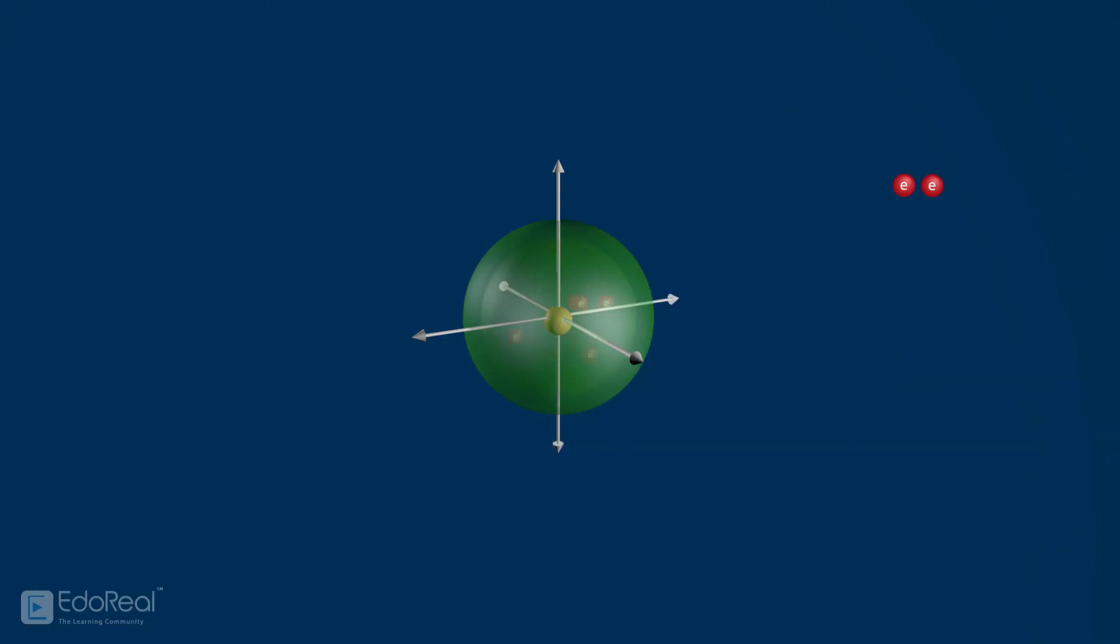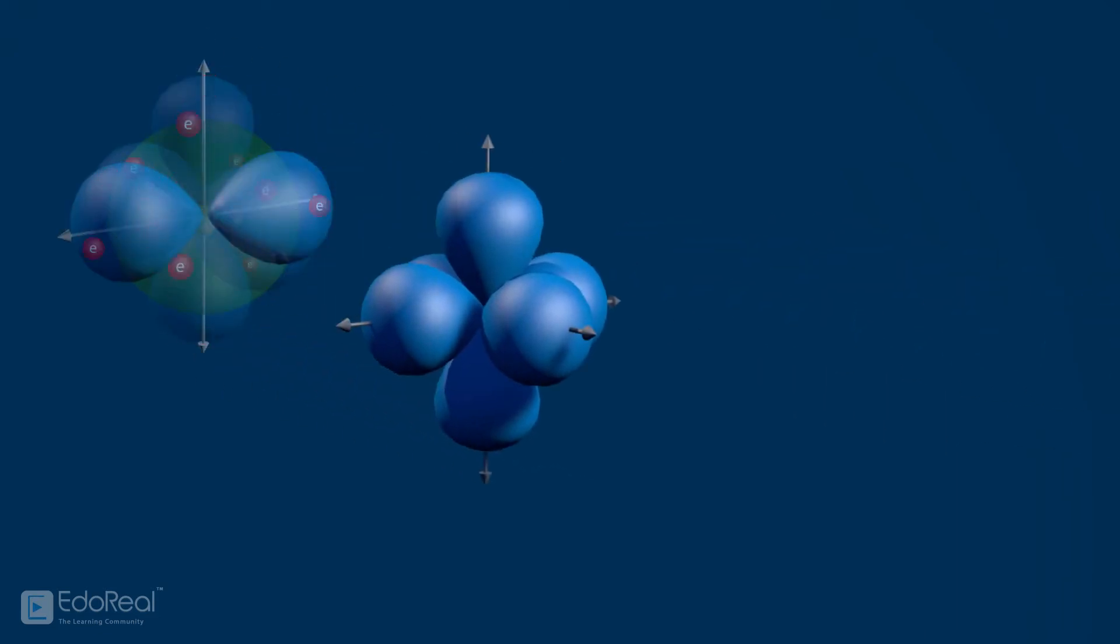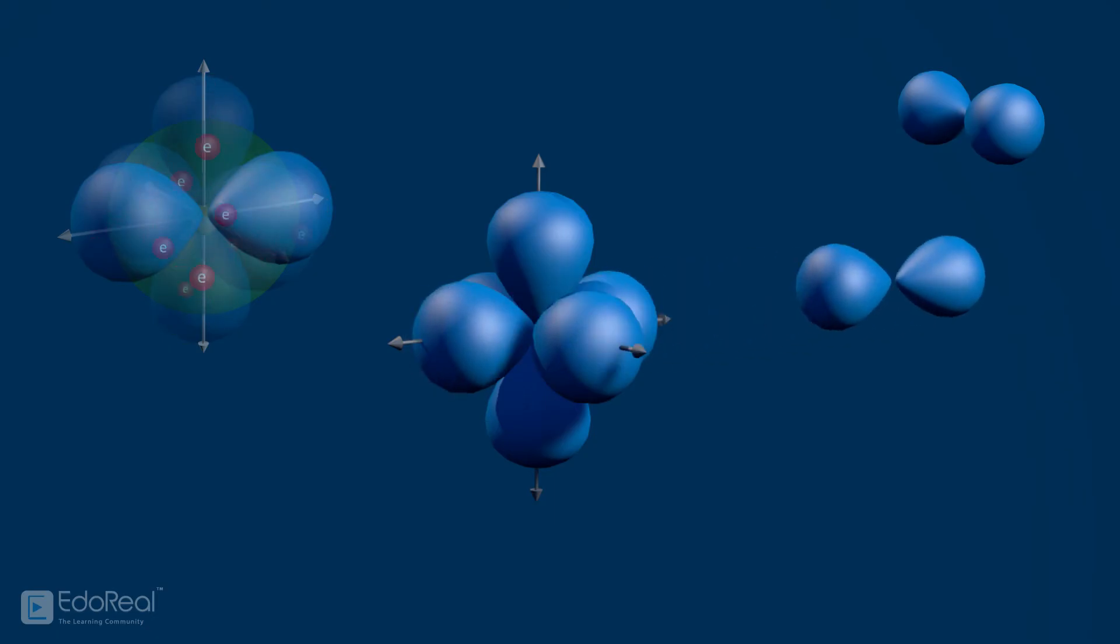Scientists observed the next three pairs of electrons covers different three-dimensional space around the nucleus, which looks like dumbbell and is represented with letter p. The entire space where the three pairs of electrons are found is called p orbital.